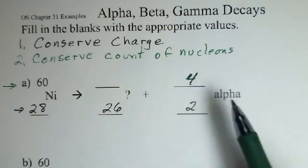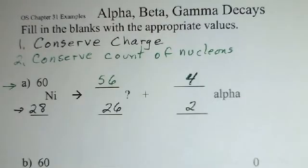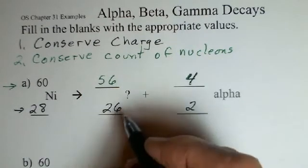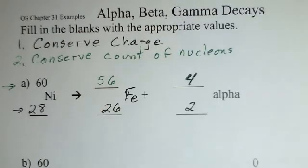And now we go to a table and we look up what element has 26 protons, and we find that it's iron. So we go ahead and write that in. We've completed this equation. We balanced it.